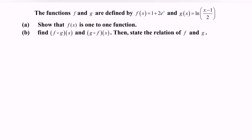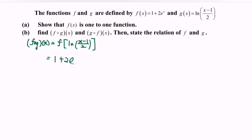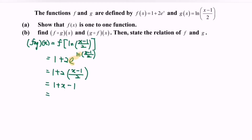Part B: find f∘g, then g∘f, and state the relation of f and g. For f∘g, substitute g(x) = ln((x − 1) / 2) into f(x). We get 1 + 2e^(ln((x−1)/2)). Since e^(ln(u)) = u, this becomes 1 + 2 · (x − 1)/2 = 1 + (x − 1) = x. So f∘g = x.